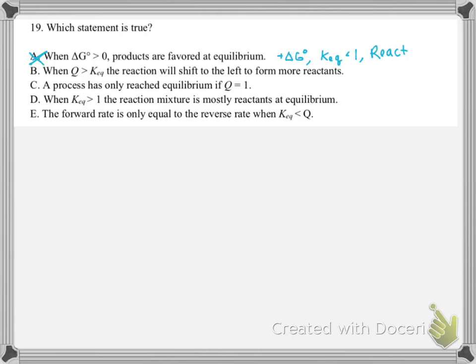For B it says when Q is greater than K, the reaction will shift to the left to form more products. When Q is greater than Keq — if it's products over reactants — that means we must have too many products. The reaction has to go in the reverse direction to the left, and that would correspond to a positive delta G nonstandard. This option looks like it's true.